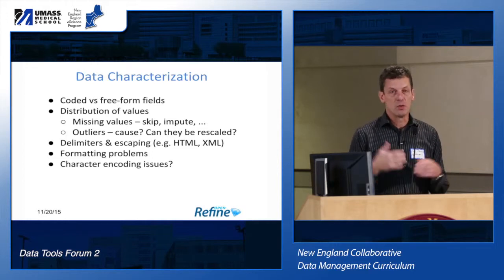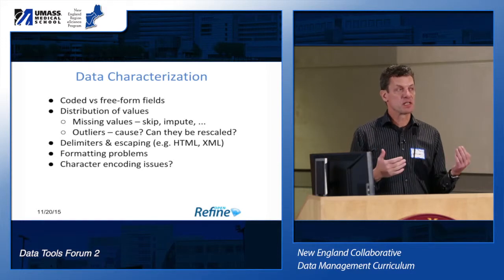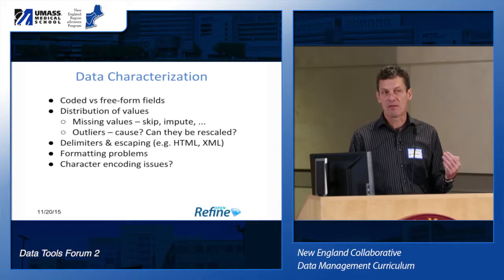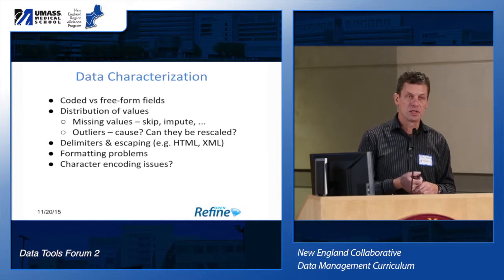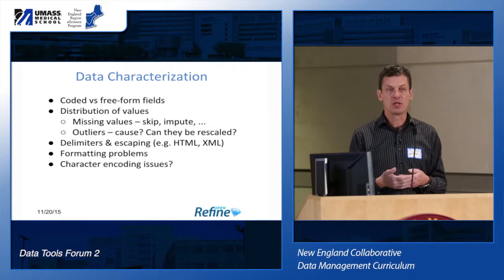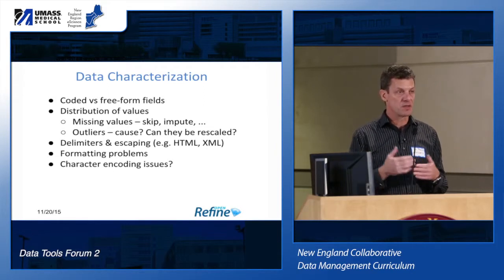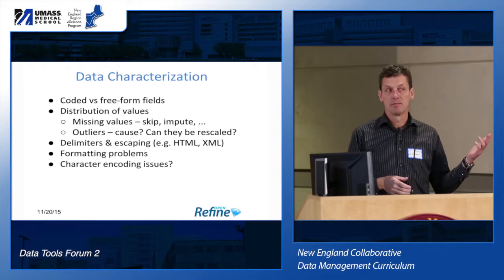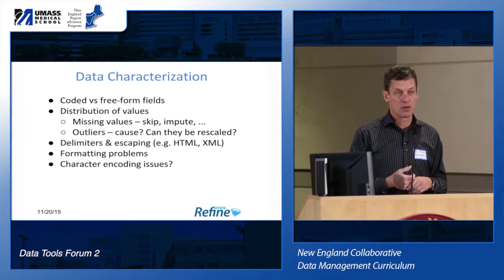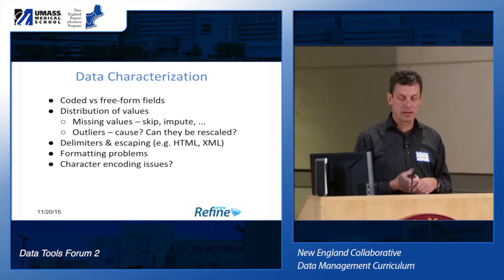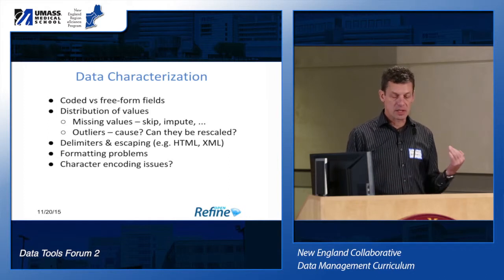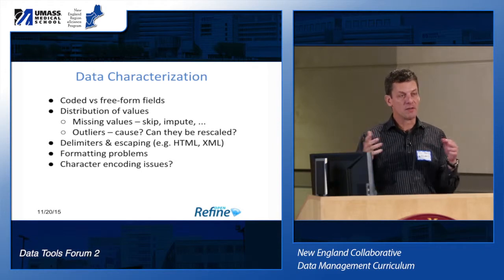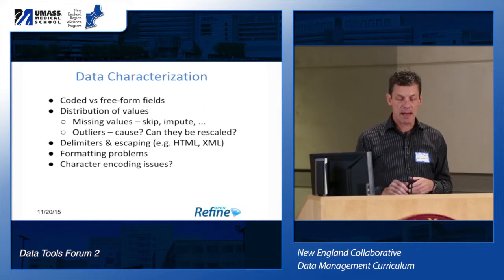One of the first things you want to do when you get a new file — particularly if it's something you're not familiar with — is kind of look at what types of information is there. Use the faceting tools to see the range of values for things, see if there are outliers. For example, if there are negative years, does that mean BC or is it just an error? Are there years in the future? Is that actually legal in this particular dataset? Look at how things are escaped, if you've got HTML entities or character encoding issues. Basically just orient yourself and figure out what's there.